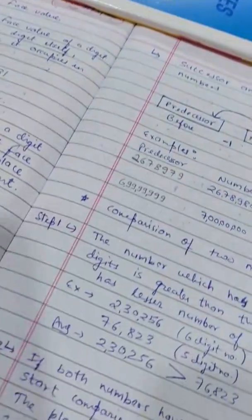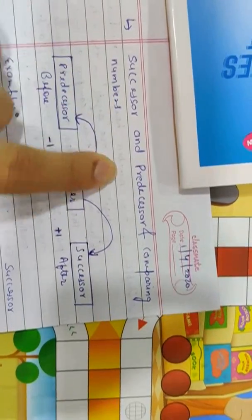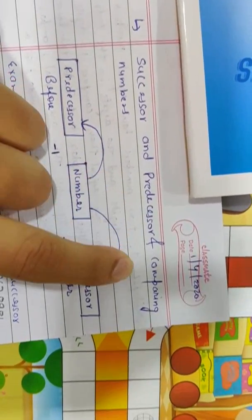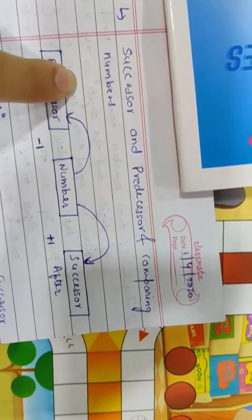Good morning, Grade 5 students. Today we are going to talk about successor, predecessor, and comparing numbers. So let's talk about successor and predecessor first, then we will talk about comparing numbers later.